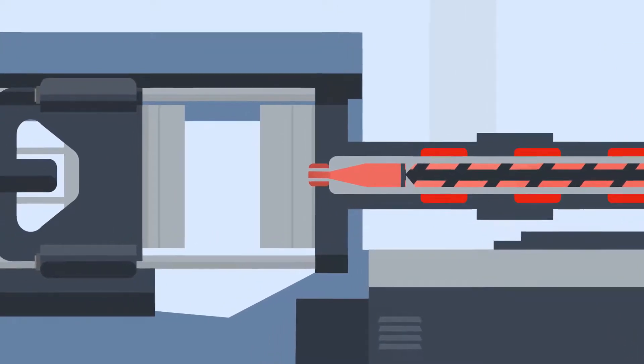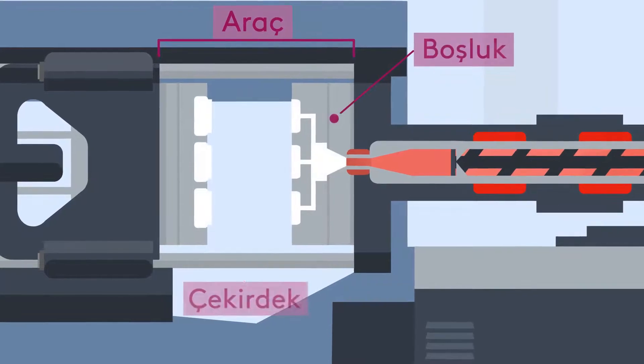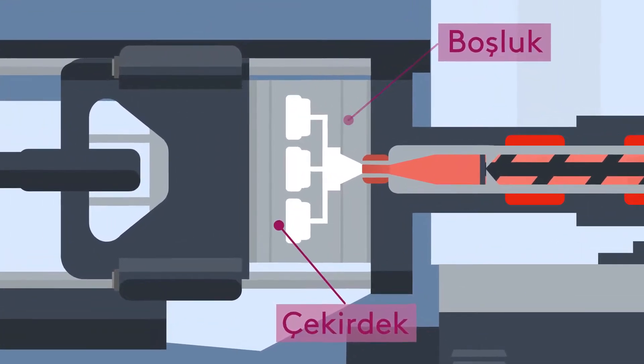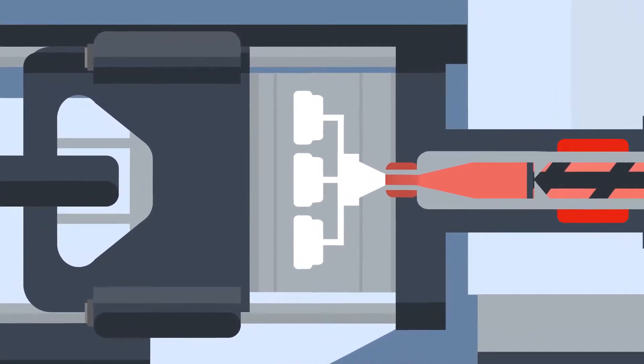Before the molten plastic is injected, the tool, which is usually made up of a fixed half called the cavity and a moving half called the core, closes. When closed, the clamp will apply pressure to the tool, ready for the injection of the plastic.